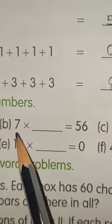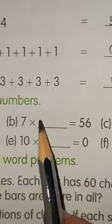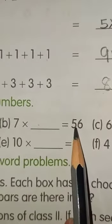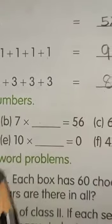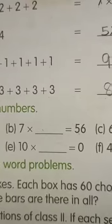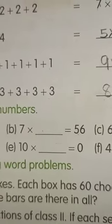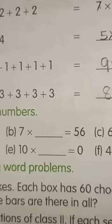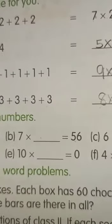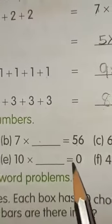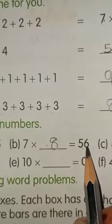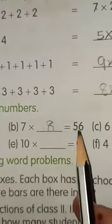Next, we have to multiply the number with 7 so that we get 56. Let's read the table of 7. 7 ones are 7, 7 twos are 14, 7 threes are 21, 7 fours are 28, 7 fives are 35, 7 sixes are 42, 7 sevens are 49, 7 eights are 56. So, in the 8th place, we are getting 56. 7 eights are 56.